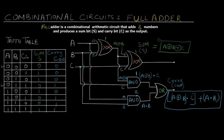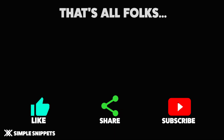We've proved that both the expressions for sum and carry hold true for all eight different combinations of inputs — this is how the full adder works, and this is the basic circuit diagram for a full adder. That's it for this video. I hope you understood the full adder combinational circuit. If you have any queries or comments, put them in the comments section below. In further tutorials we'll see more combinational circuits. If you like this video, give it a thumbs up, share it with your friends, and don't forget to subscribe to our channel.